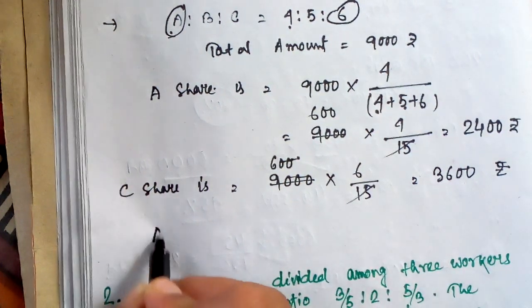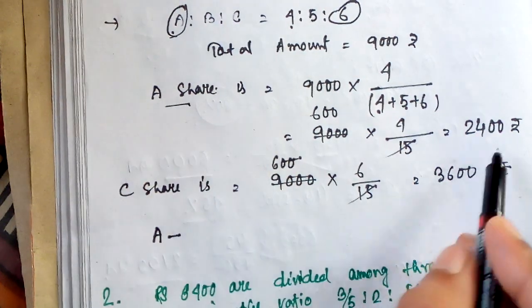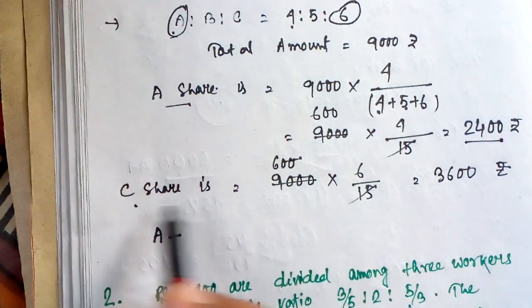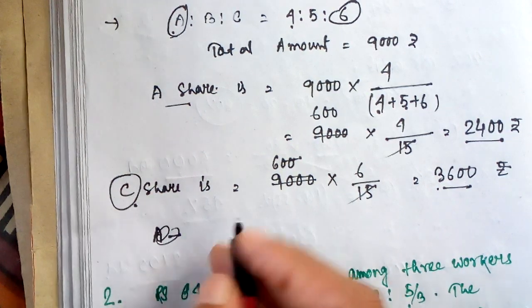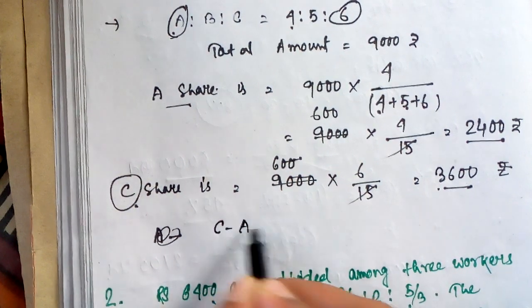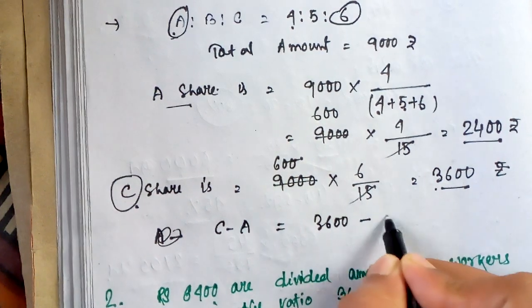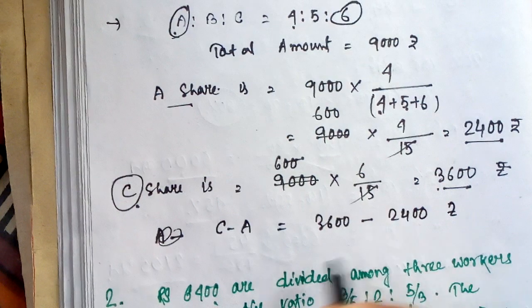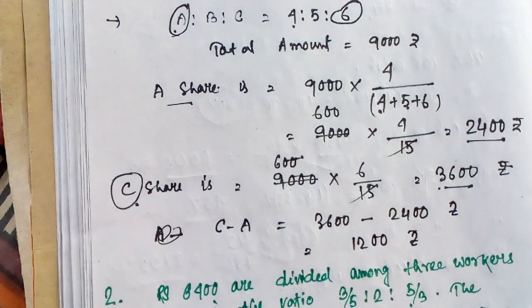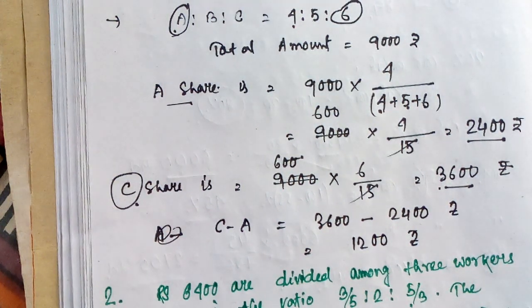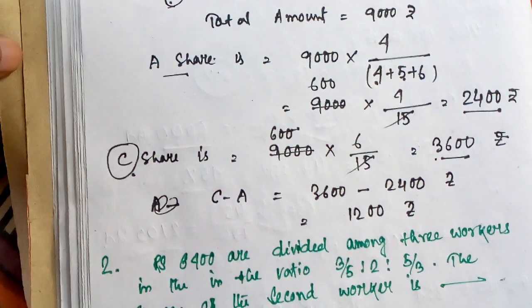And here the difference between A and C. Look at here, A is 2400 and C's share is 3600. Now, C is greater than A. Then, the difference is C subtract A. 3600 subtract 2400 rupees. And answer is 1200 rupees. The difference between A and C's share is 1200 rupees.